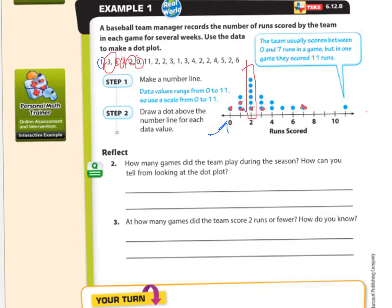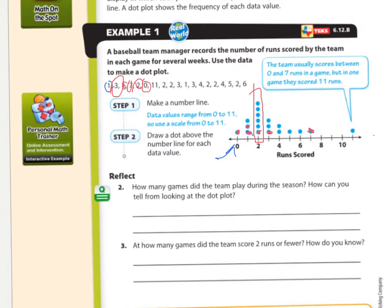Well, remember the plot shows the number of runs scored by the team in each game. So all I have to do is count the dots. There's one, two, three, four, five, six, seven, eight, nine, ten, eleven, twelve, thirteen, fourteen, fifteen, sixteen, seventeen, eighteen, nineteen. Unless I counted wrong. Nineteen.